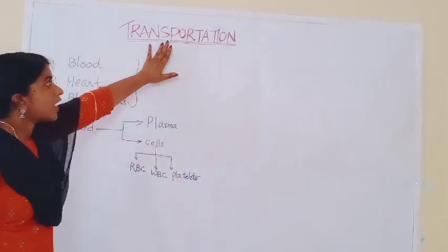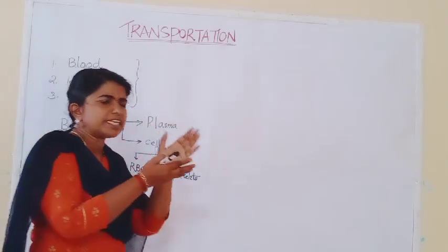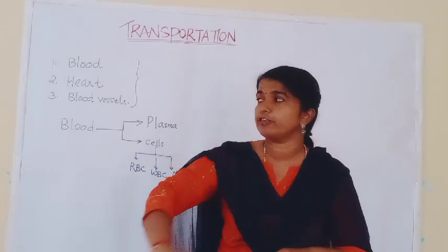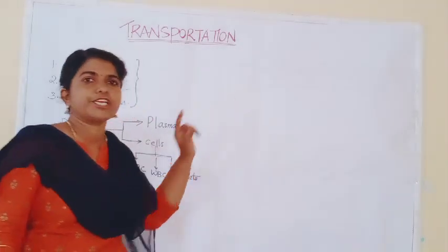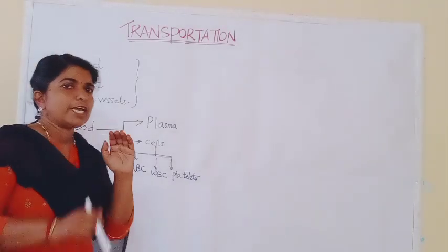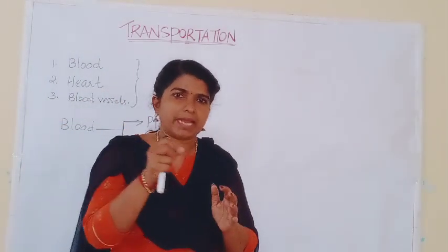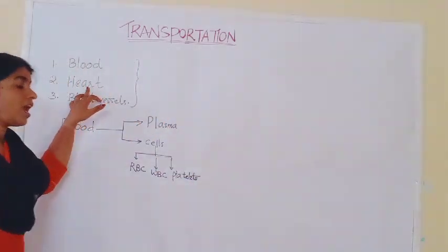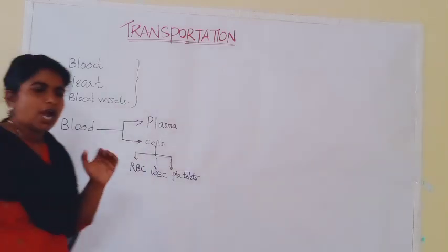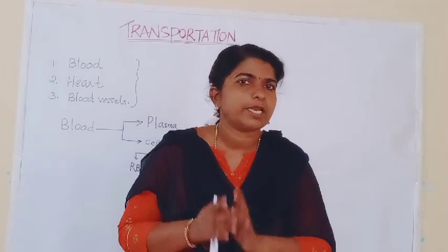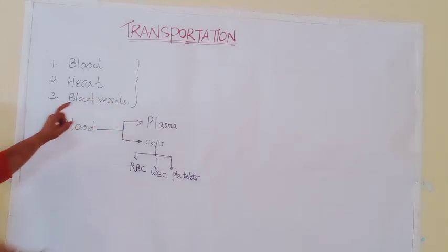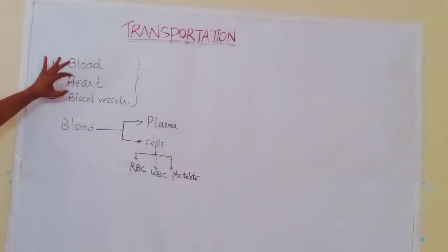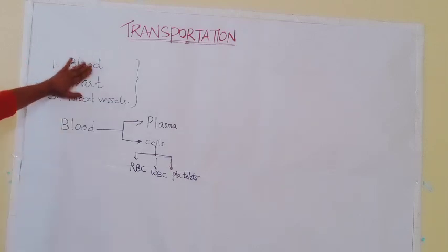The important parts of the transportation system in the human body. These materials are transported, so there should be a fluid. That fluid is nothing but blood. Blood is one of the major components of the transportation system. There should also be an organ that pumps the blood — that muscular organ is the heart. Heart is the second component. Blood passes through tubes known as blood vessels. So the three components of the transportation system are blood, heart, and blood vessels. Now let us study them one by one.